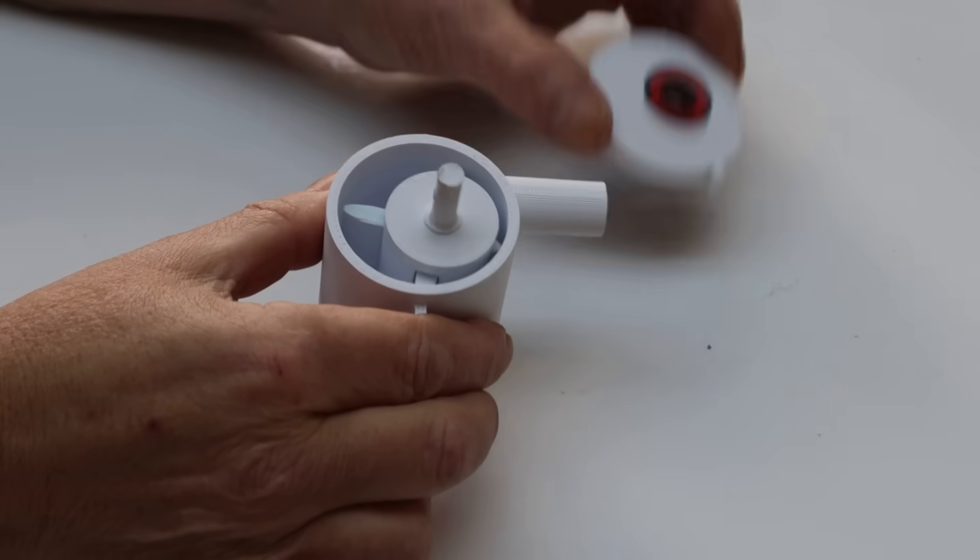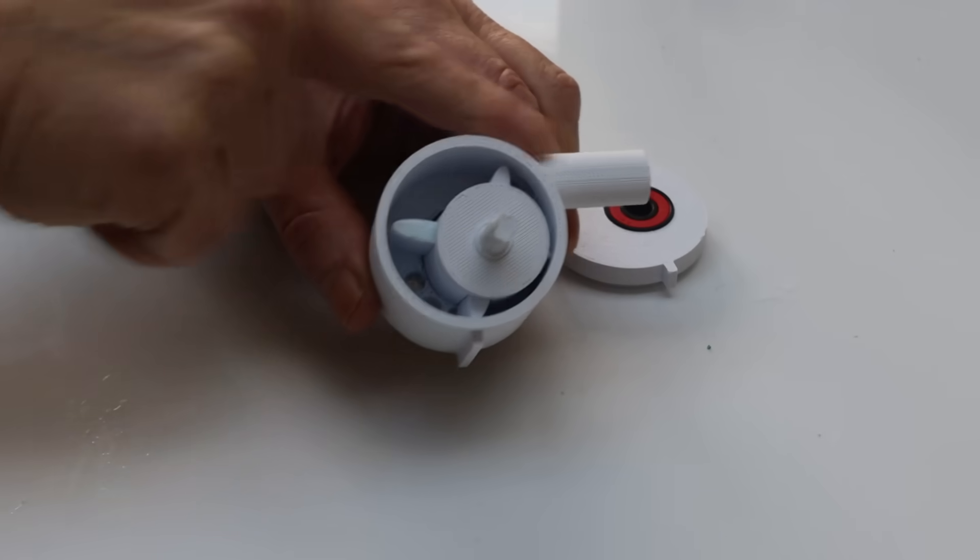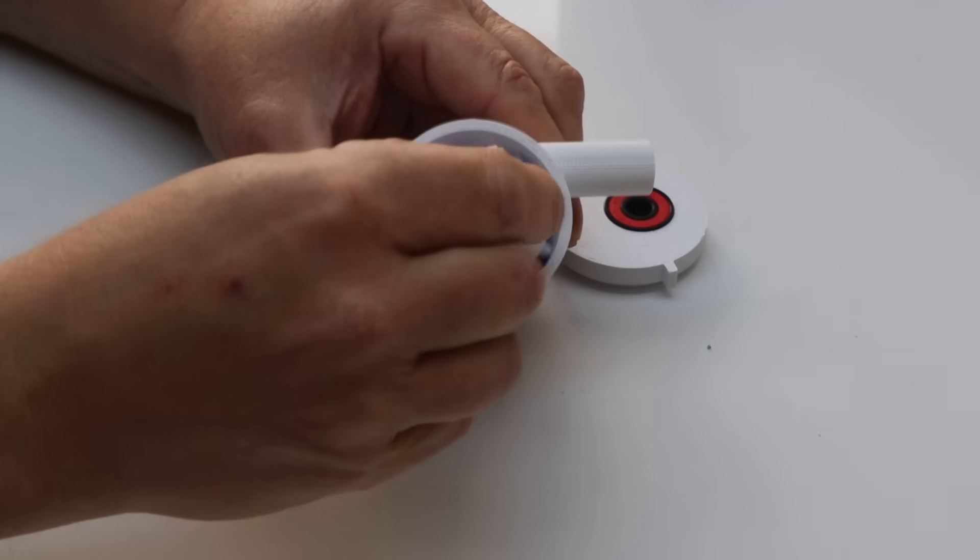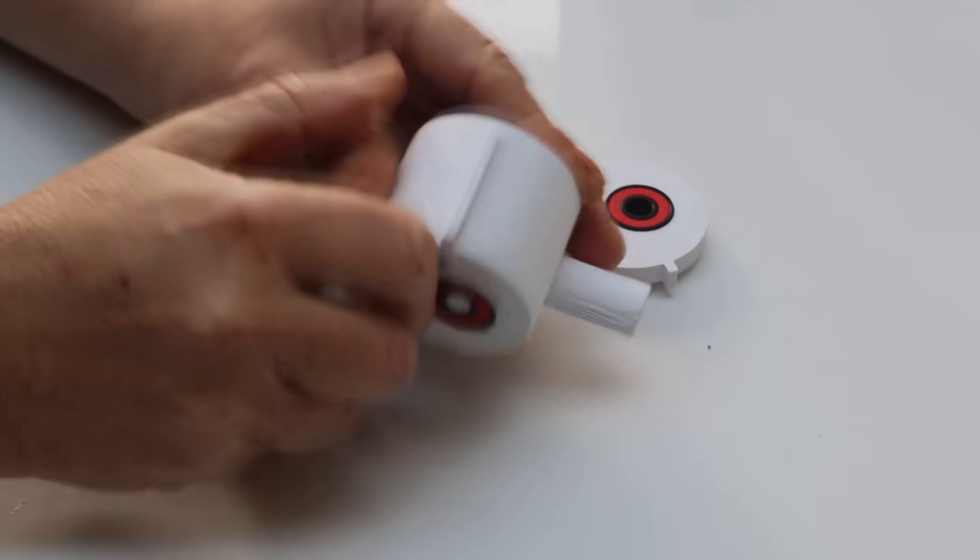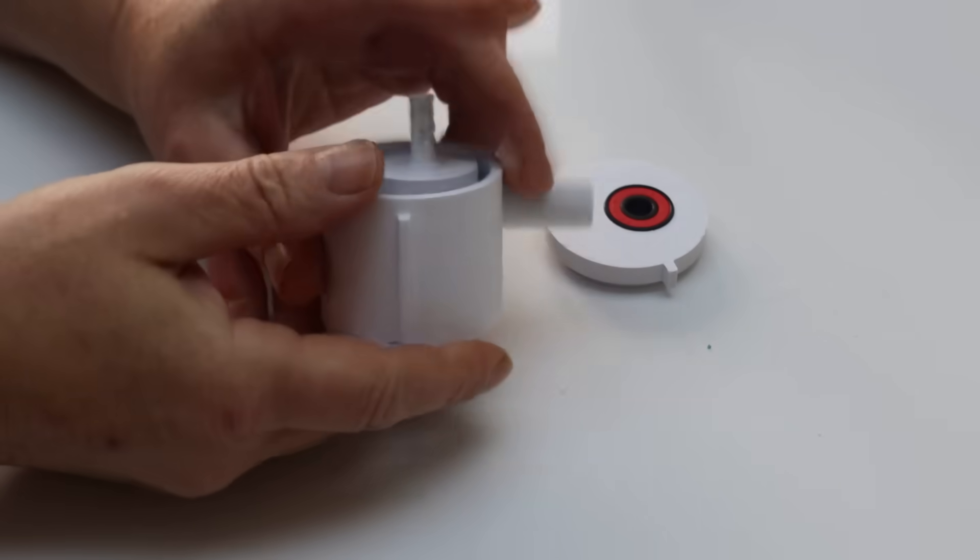So we take the top off, we can see how it actually works. Now the air is forced in here, hits a vane, forcing that to rotate until it reaches that point when it's exhausted.